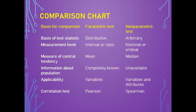The fundamental differences between parametric and non-parametric tests: in a parametric test, the test statistic is based on distribution, whereas the test statistic is arbitrary in non-parametric tests. In parametric tests, measurement of the variable is done on interval or ratio level, as opposed to non-parametric tests where variables are measured on nominal or ordinal scale. The measure of central tendency in parametric tests is mean, while in non-parametric tests it is median.